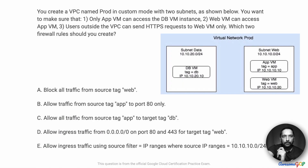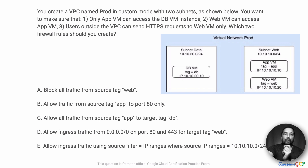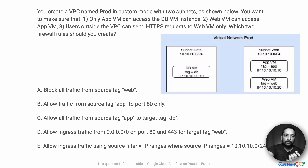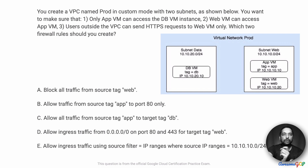In this project scenario, you create a VPC named prod in custom mode with two subnets, as shown in the diagram. You want to make sure that: 1. Only AppVM can access the dbVM instance. 2. WebVM can access AppVM. 3. Users outside the VPC can send HTTPS requests to WebVM only. Which two firewall rules should we create?